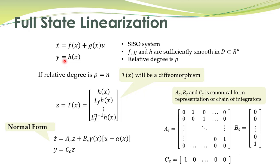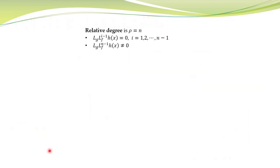Before proceeding, we want to prove the statement that this state transformation will bring the system into this particular normal form. This proof is simple. What do we mean by relative degree rho equal to n? If relative degree is equal to n, then these expressions from the definition of relative degree are satisfied.